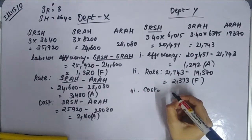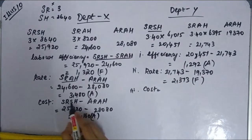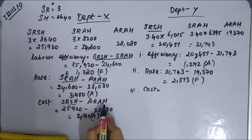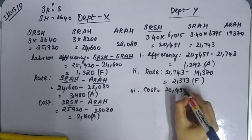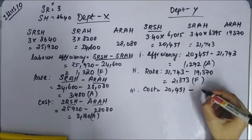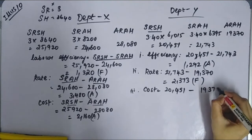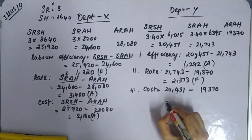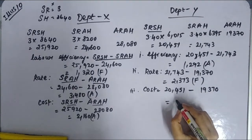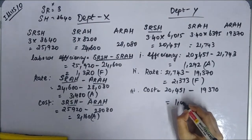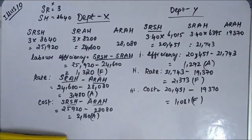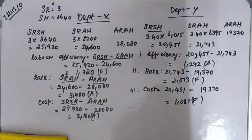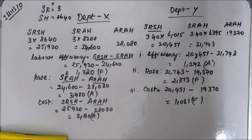Labor cost variance formula is SRSH minus ARAH. SRSH is 20,451 minus ARAH 19,370 = 1,081, which is Favorable. With that, Illustration 10 is complete.